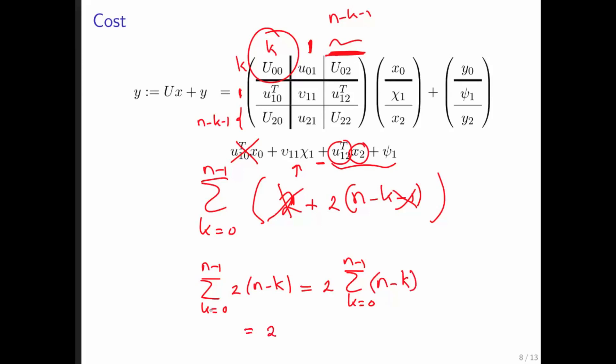But what does that equal? It's 2 times the quantity: when K is equal to 0, we get N; when K is equal to 1, we get N minus 1 and so forth. Finally, when K is equal to N minus 1, we get 1. So that's just 2 times the sum from J equals 1 to N of J. But this is something that we saw in week number 2. That equals N times N plus 1 over 2, which we must multiply by 2.